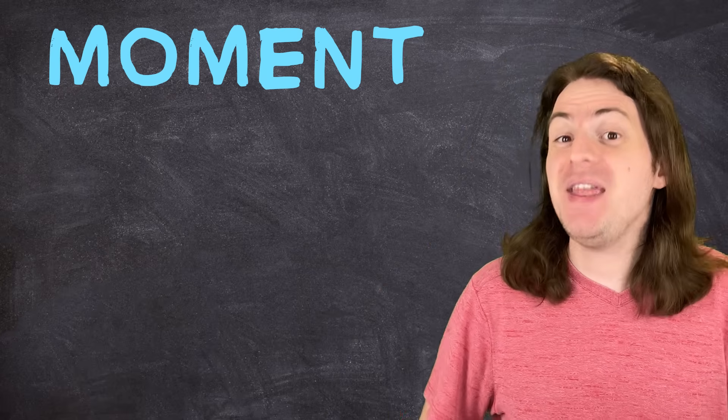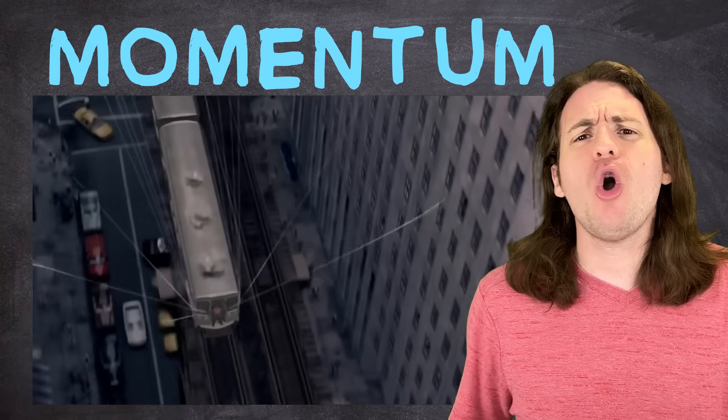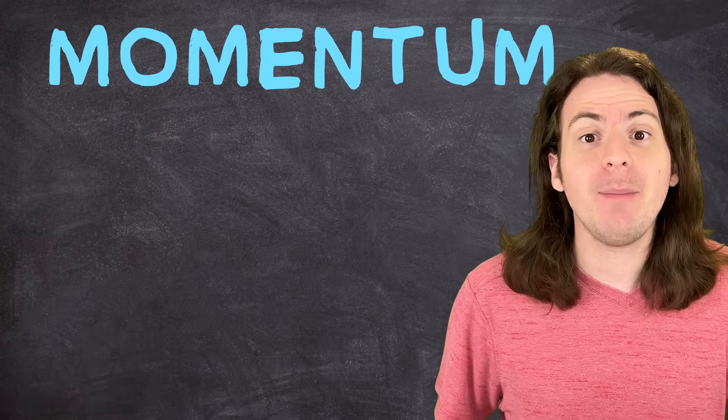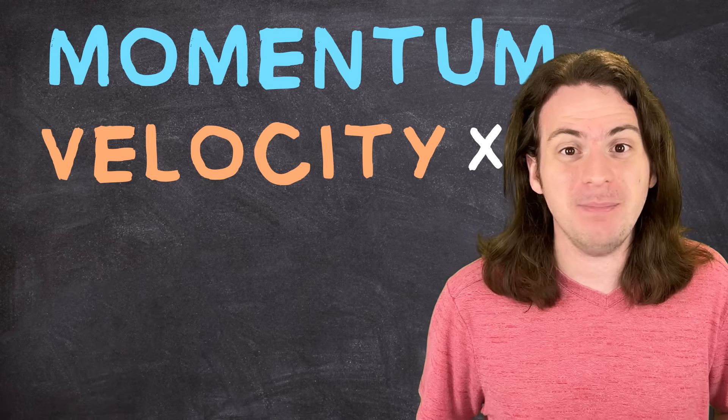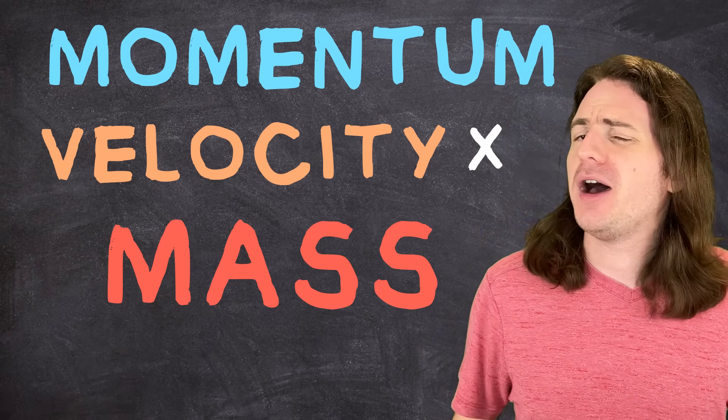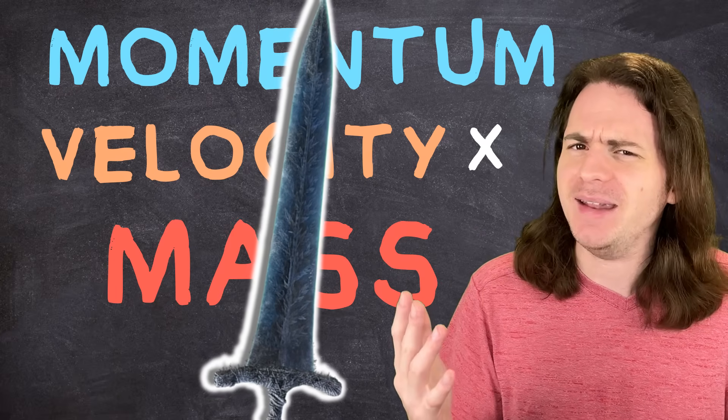And that being said, increasing the mass of a blade changes more than just the force it applies. It also increases the momentum of your swing, which is essentially the measure of how hard it is to stop a moving object, and can be found by multiplying something's speed by its mass. Now, having more momentum can be a double-edged sword. Pun definitely intended. I mean, come on.